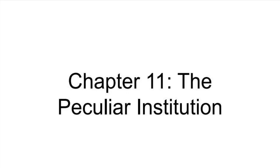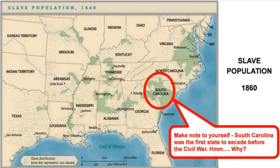Chapter 11 is dedicated to the peculiar institution — American slavery. There is an entire chapter dedicated to this because slavery very much shaped the economy of the United States during the market revolution period. It solidified itself as King Cotton in the South after Eli Whitney's invention. Not only did it shape the economy, but it entrenched itself so deeply in the South that the Civil War was almost inevitable.